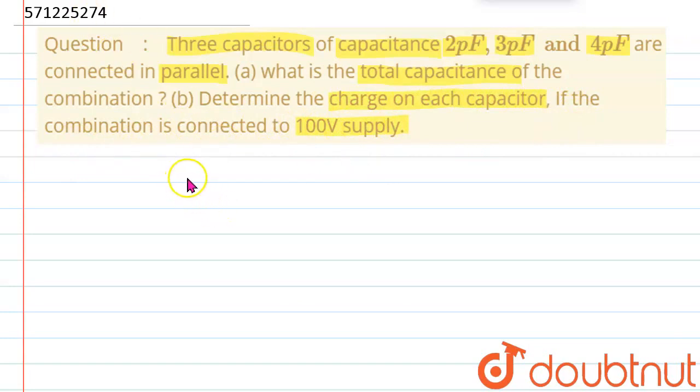So, here we are given 3 capacitors. First capacitor value C1 is equal to 2 picofarad, which will be equal to 2 into 10 power minus 12 farad. And then C2 is equal to 3 picofarad, so which will be in farad values will be equal to 4 into 10 power minus 12 farad.